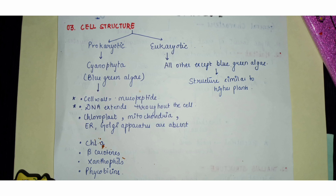Blue-green algae have a very distinguishing character: their cell wall is made up of mucopeptide instead of cellulose. Being prokaryotic, there is no defined nuclear membrane, and the other organelles such as chloroplast and mitochondria are single-membrane bound.